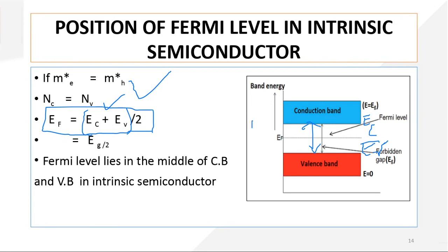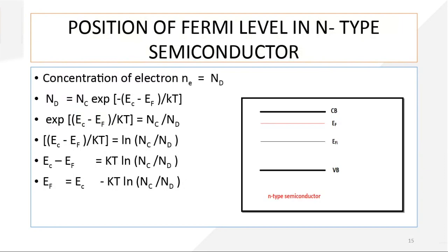For example, suppose the conduction band has energy 10 and the valence band has energy 4. Adding them gives 14, divided by 2 gives 7. So the Fermi level lies at 7, which is exactly midway between the conduction band and valence band. This is the position of the Fermi level in an intrinsic semiconductor — it always lies at the middle, between the conduction band and valence band.